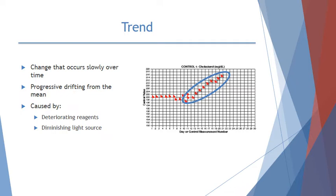A trend is a change that occurs slowly over time. You can see the QC values gradually increasing over a period of about 10 days in the chart. This may be caused by reagents that are starting to deteriorate, or by something like a diminishing light source — something that slowly changes results over time.